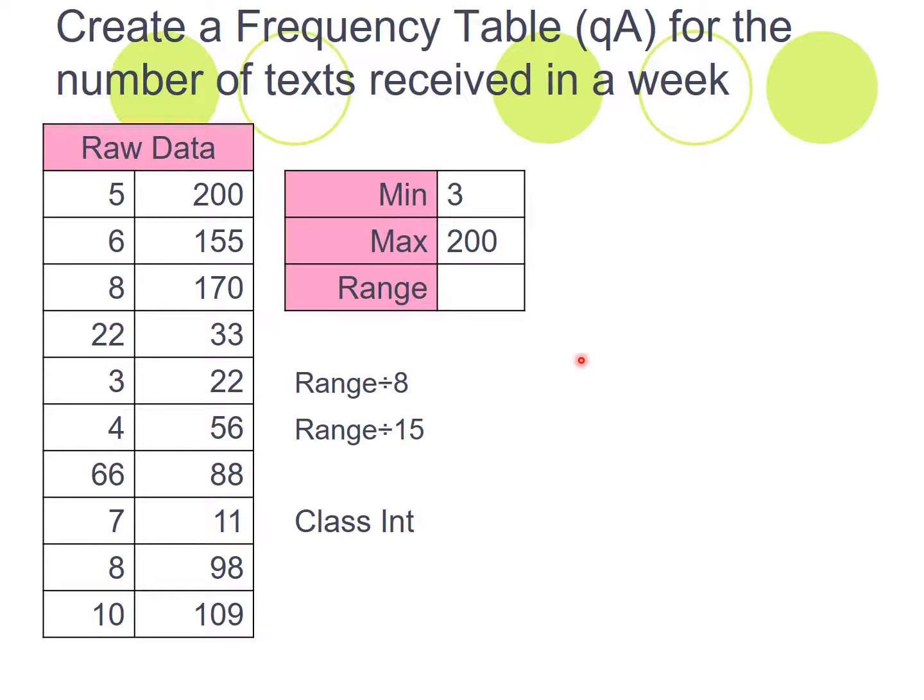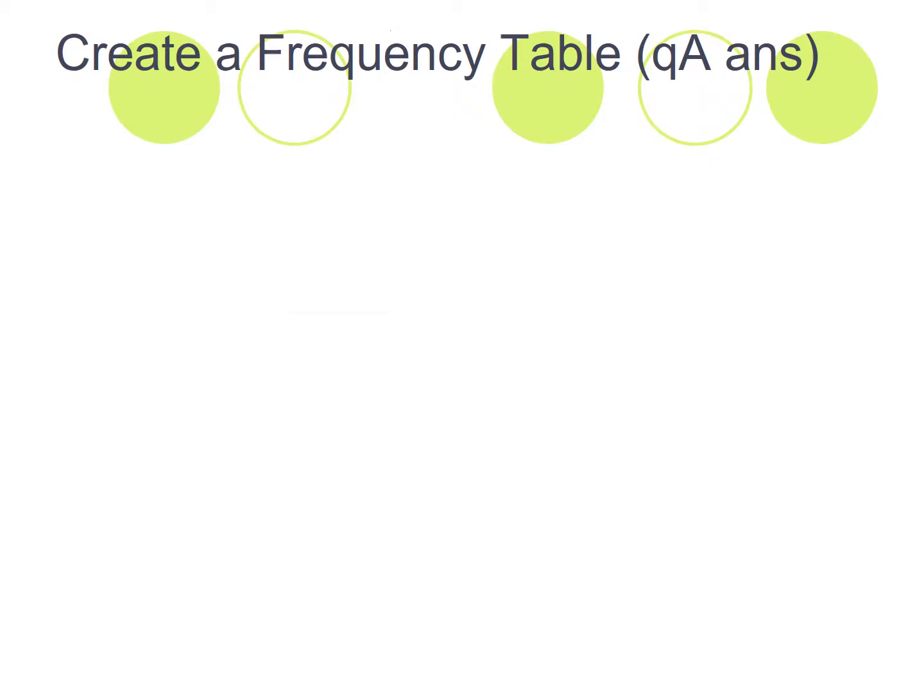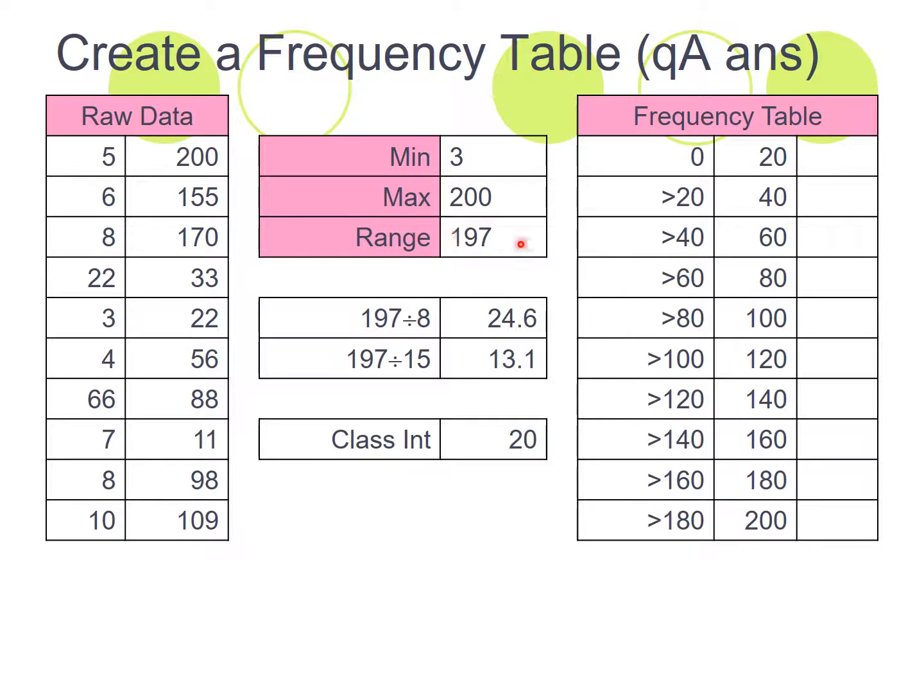Okay, so let's go through this one here. If your minimum is three and your maximum is 200, so your range is going to be the 200 minus the three, which gives you 197.